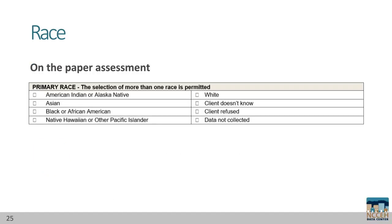Here is race on the paper assessment. If more than one option is identified, mark or number the responses in the space to the right of each selection. This way, we'll be able to differentiate the second or third identification from the primary selection.